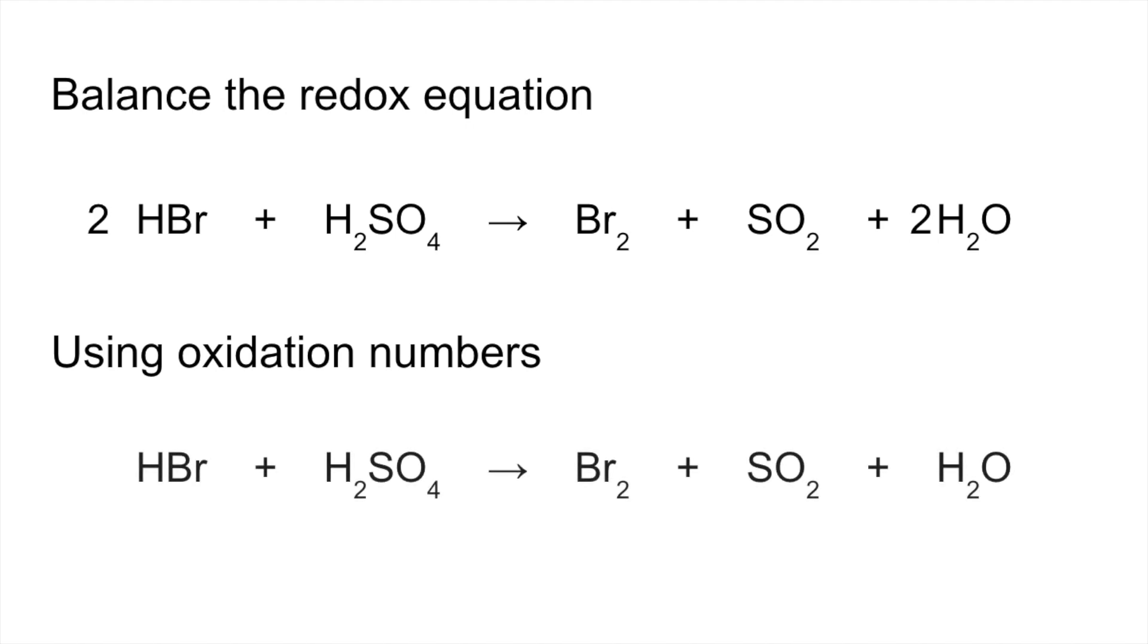There's the equation again. If we look at oxidation number changes we've got negative 1 in the bromine at the start, we've got positive 6 in that sulfur, and then the bromine goes to 0 and the sulfur goes to plus 4.